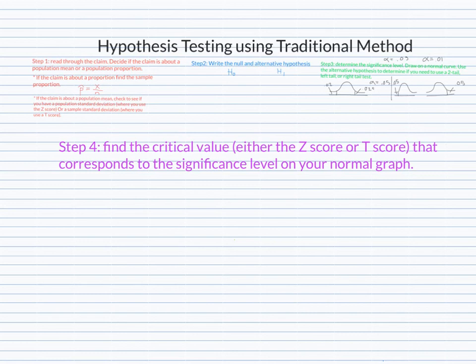Step four is to find the critical value that relates to the significance level. You will find either a z-score — if you have the population standard deviation and are finding the mean, or are finding a proportion — or a t-score, if you are finding the population mean but do not know the population standard deviation. This is similar to confidence intervals where you find the corresponding score that goes with the significance level.